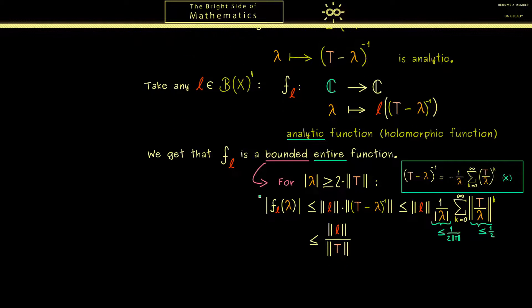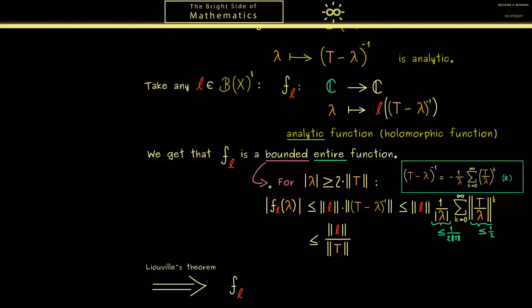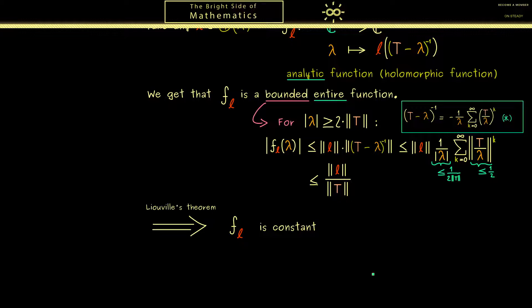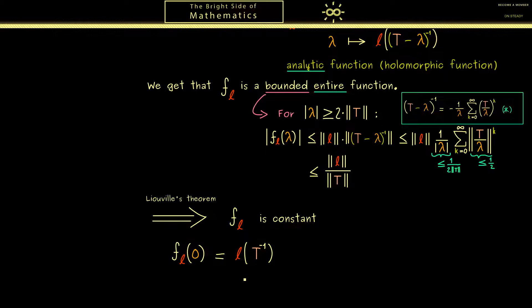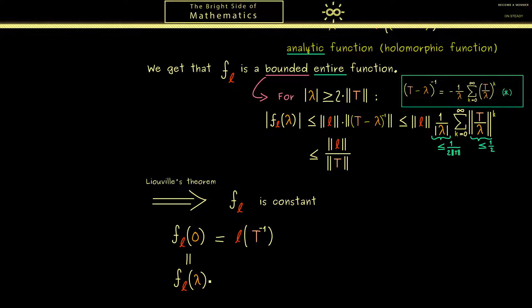Okay, so this tells us that f_l is indeed a bounded entire function. And now from complex analysis we can apply Liouville's theorem. It tells us that a bounded entire function needs to be a constant function. And please note here this fact holds no matter which linear function l we choose. Okay, since we have a constant function we can simply calculate this constant. We can simply put in one point into the function, and of course the simplest one would be 0. And there we just have l of T inverse. And now this value is the only value the function can have. Therefore we have this equality for all complex numbers lambda.